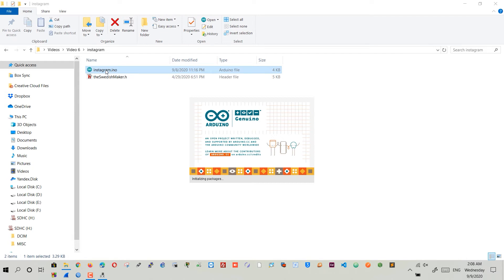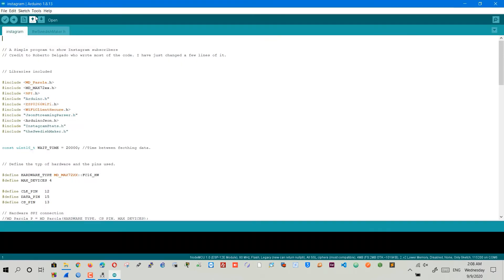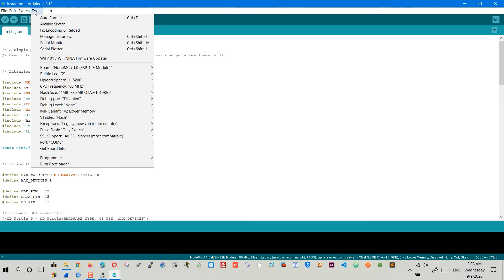Open the file that you've downloaded and open up the Instagram file. If you don't recognize any of those libraries, make sure to check out my other video where I explain how to install libraries on your Arduino software.